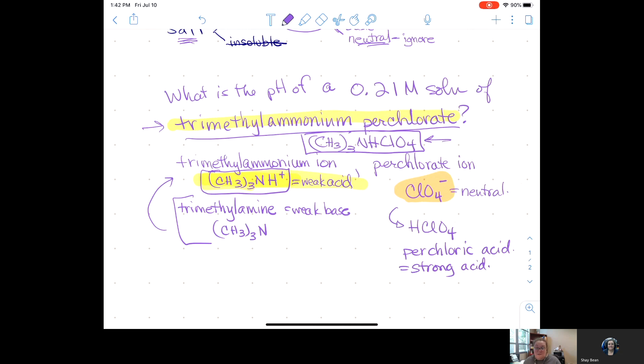A strong acid is strong because he's going to ionize 100% in water, which means he's not going to go backwards. You're talking about an equilibrium reaction that is 100% in the forward direction for that strong acid to ionize. So, the reverse reaction doesn't happen. Therefore, in the reverse direction with the perchlorate ion, nothing's going to happen. He's neutral.